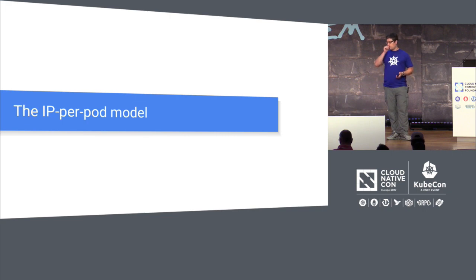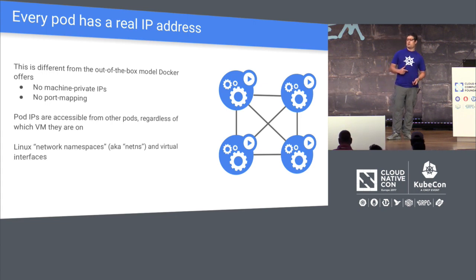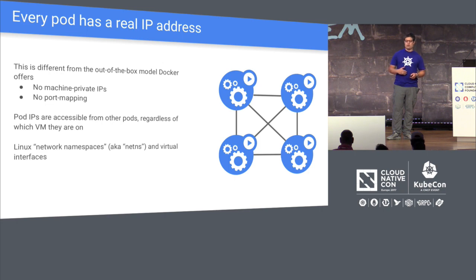We're going to dive into some of the fundamental constructs and philosophies behind the Kubernetes networking model. It starts with the IP per pod model. Every pod has a real IP address associated with it, so the pod has an IP of its own. We're not going to play games with ports or private machine IPs. At Google and Borg, we deploy tens of thousands of jobs and found that mapping things to ports hurts — port collision and port management becomes a game in itself.